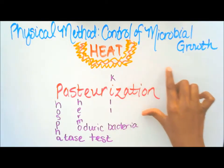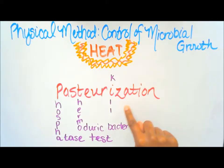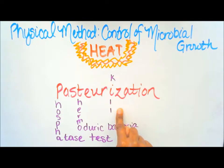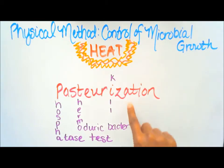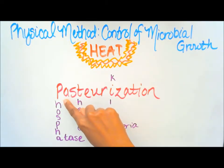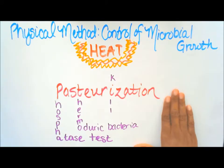To recap: in pasteurization, harmful organisms are killed, but not all organisms are killed. There are some heat-resistant bacteria called thermoduric bacteria that can survive. The test done in pasteurization is the phosphatase test.